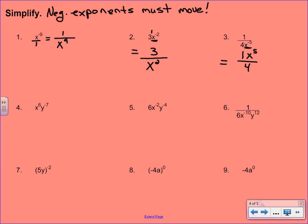Number 4, we have a positive exponent on the 6, so that's going to stay where it is. We have a negative exponent on the y, so that's going to shift to the bottom. These problems are really just about noticing what's going to stay and what's going to go. Number 5: the 6 has a positive exponent, so that's going to stay. The x and the y both have negative exponents, so those are going to go straight to the denominator. We end up with 6 over x squared y to the 4th.